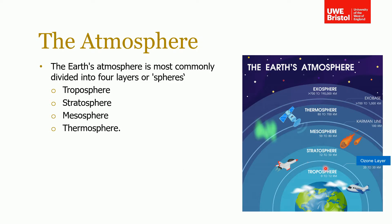The troposphere is where we live, where our mountains are, and where most commercial aircraft fly. The layer above, from 12 kilometers up to 50 kilometers, is the stratosphere. Some aircraft go up into the stratosphere, but it tends to be high-performance aircraft. The stratosphere and troposphere combined account for 99.9% of the Earth's atmosphere, so don't be fooled into thinking there's an even distribution between layers — there isn't.